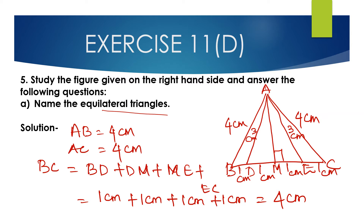All three sides are equal to 4cm: AB is 4cm, BC is 4cm, and AC is 4cm. Since all 3 sides are equal, this is an equilateral triangle. So the equilateral triangle is triangle ABC.